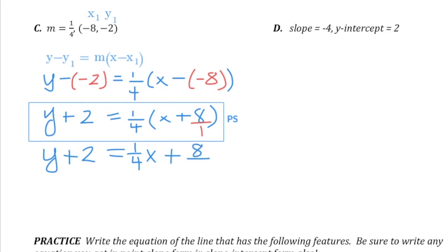So we have plus 8 over 4. 8 over 4 can be reduced to 2. And now the second step is we need to get the y alone. It has a plus 2 attached to it, so do the opposite, subtract 2. Now in this case, when we subtract 2 on both sides, it cancels on the left, but it also cancels on the right.